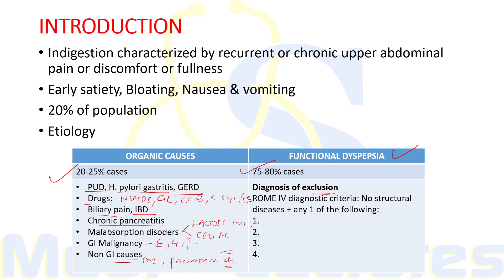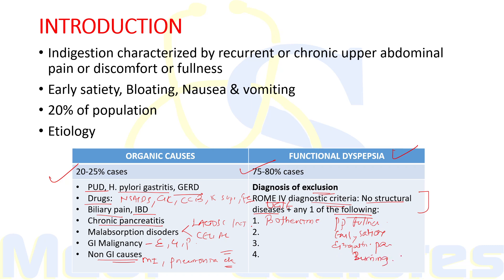There is a Rome 4 diagnostic criteria which suggests that there should be no structural disease, including on upper GI endoscopy, along with any one of the following: bothersome postprandial fullness, bothersome early satiety, epigastric pain, or epigastric burning sensation. Any one of these, if present, will support the diagnosis of functional dyspepsia.